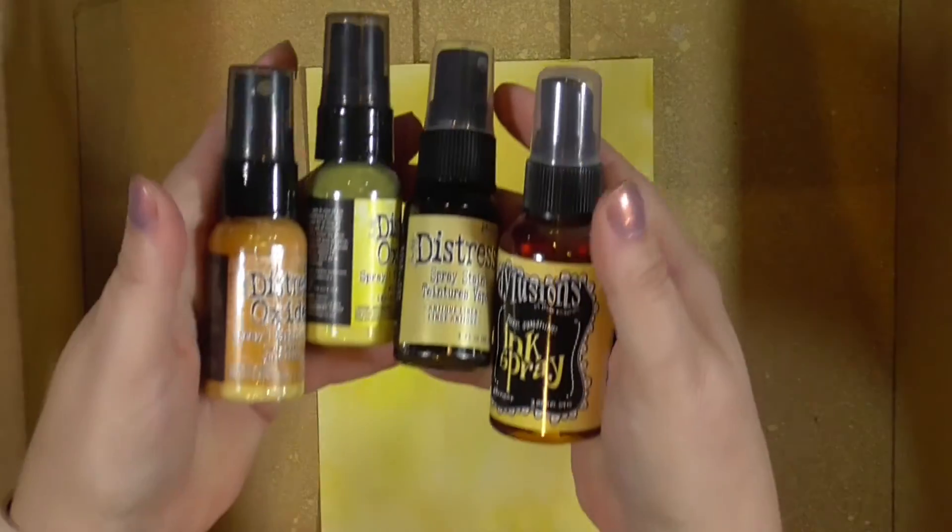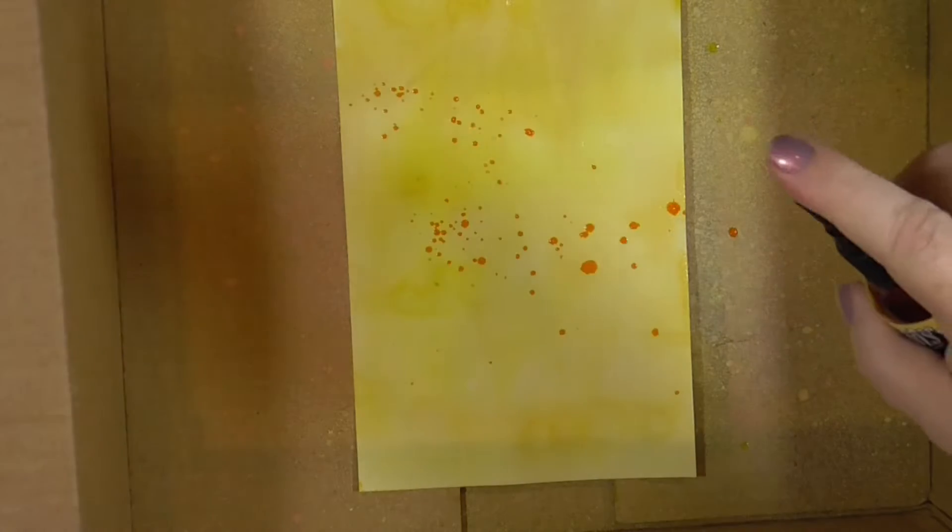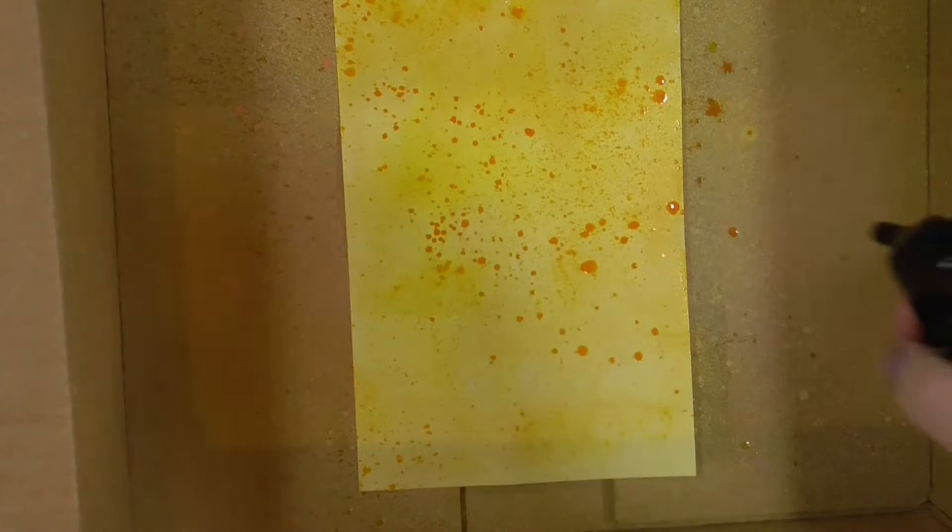My next layer is to add some yellows and amber colors with Distress sprays and Dylusions sprays. I think I don't have a Distress stain, so the first thing I did after I put my page in my splat box was to get it wet again just a little bit with a water bottle. Then I'm adding one color at a time, followed by a couple of sprays of water from my Distress water sprayer, the Tim Holtz one.